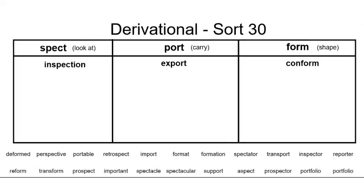Hi friends, today we are working on derivational sort 30, which focuses on using Latin roots along with prefixes and suffixes to determine the meaning of a word.